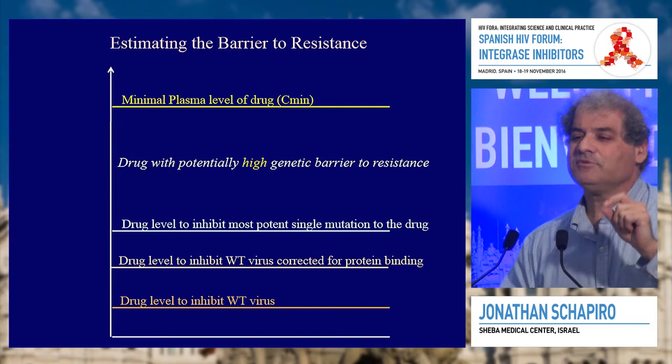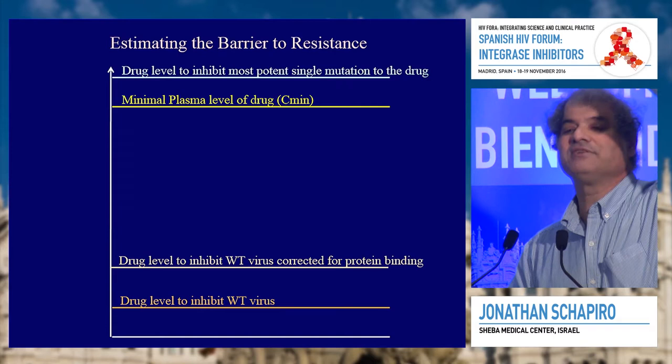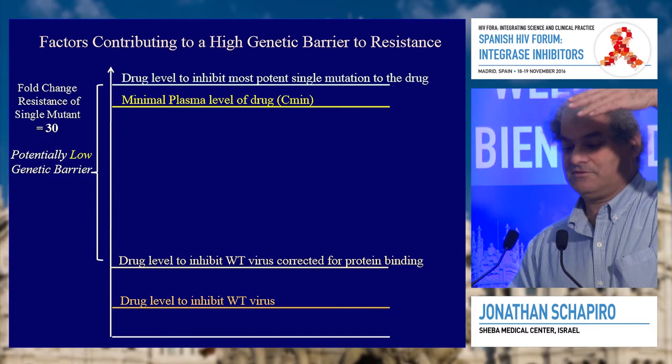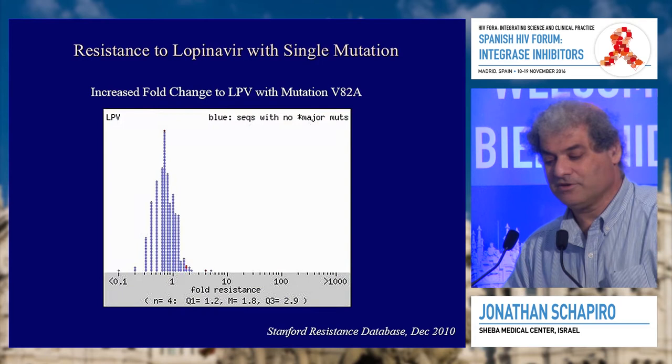A key to having a high genetic barrier drug is not just being above the level needed for the wild-type virus — it's being above the level needed for that single mutation, which is always developing. If a single mutation gives only threefold resistance, we might still be above it. But if it's 30-fold, we'll never get above it, and that will definitely be a low genetic barrier drug.